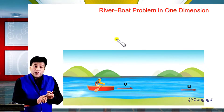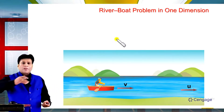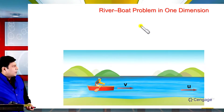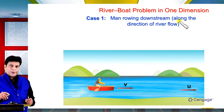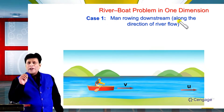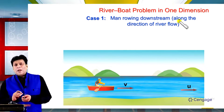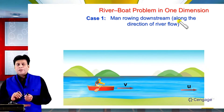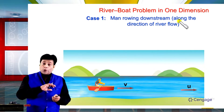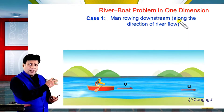Case 1: the man is rowing in the downstream direction — that means along the direction of the river flow. Because this is a case of one-dimensional motion, in one-dimensional motion we should consider the direction first. We need to decide which direction we are taking as positive. So let us consider the rightward direction as positive.